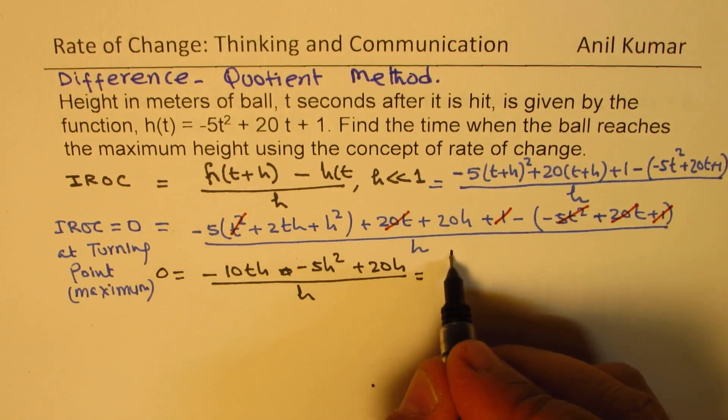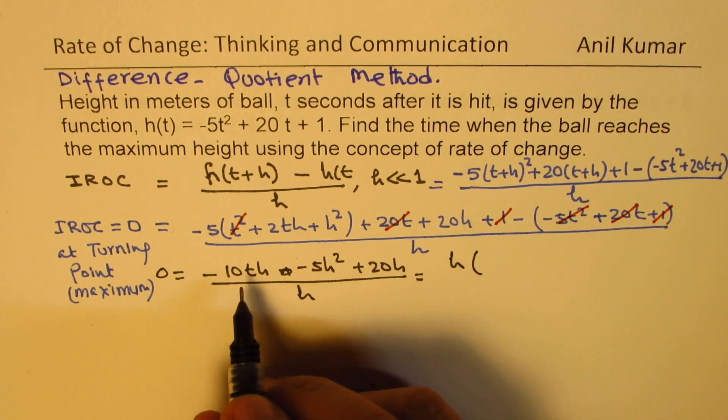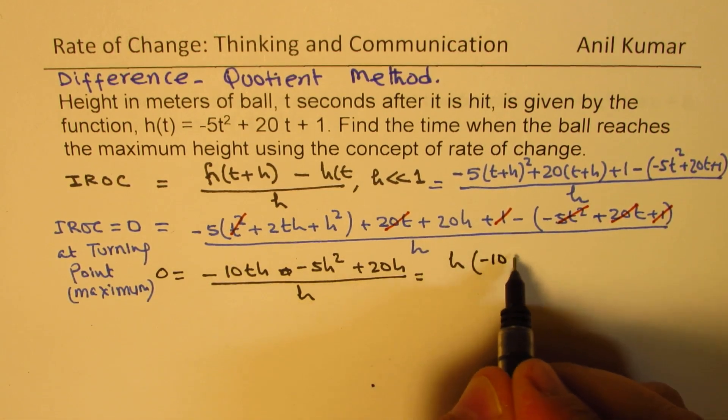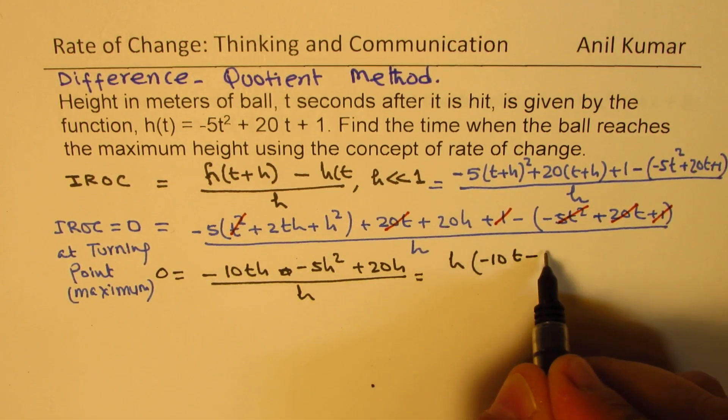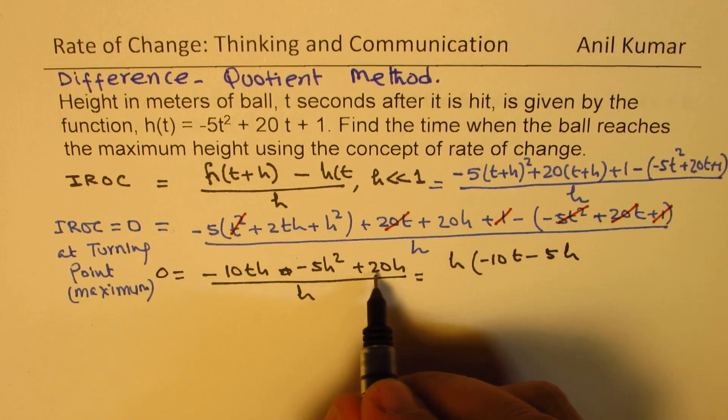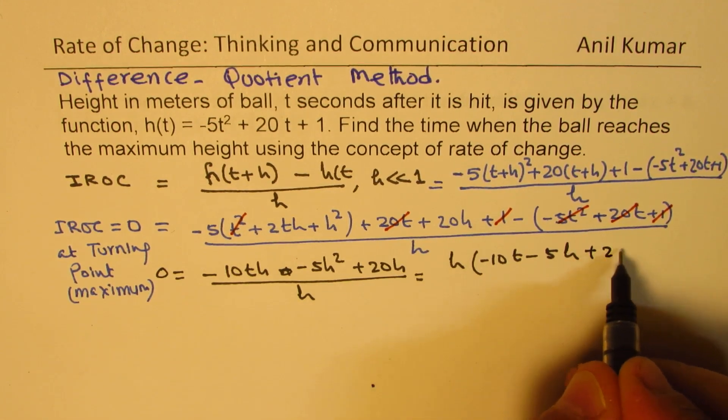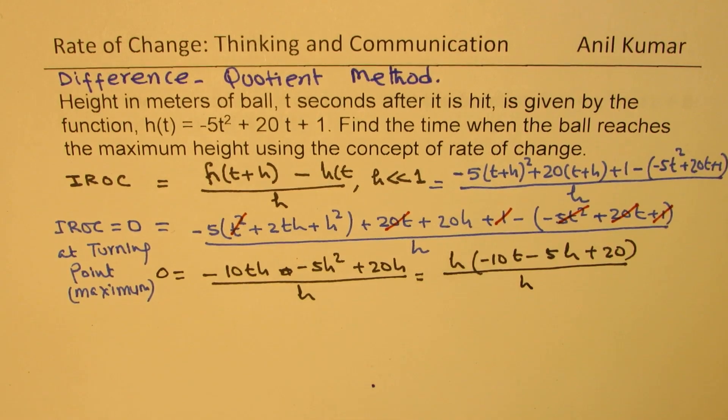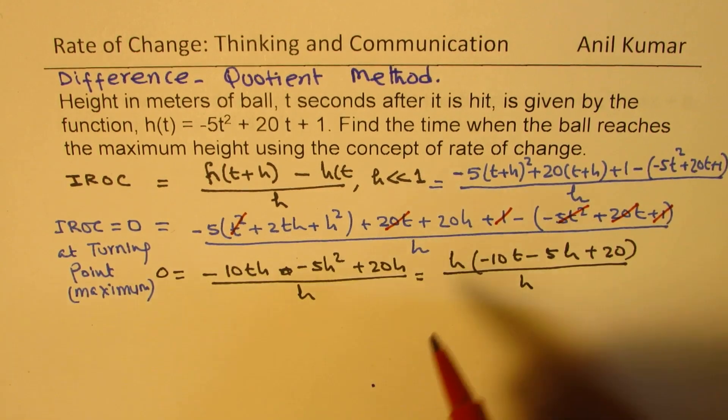So here, h is common now. So we can take h common. There are other terms also which are common. Anyway, we'll keep them. So minus 10t minus 5h, and then here we have plus 20 over h. So the idea is to cancel h.